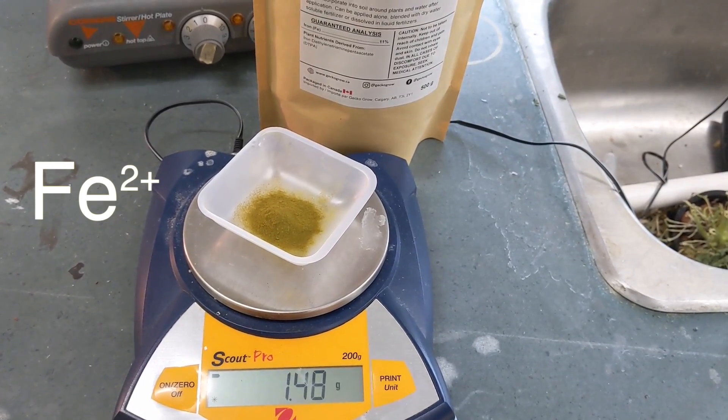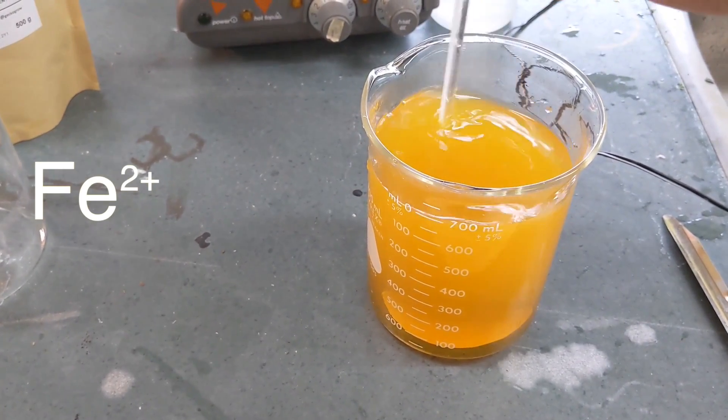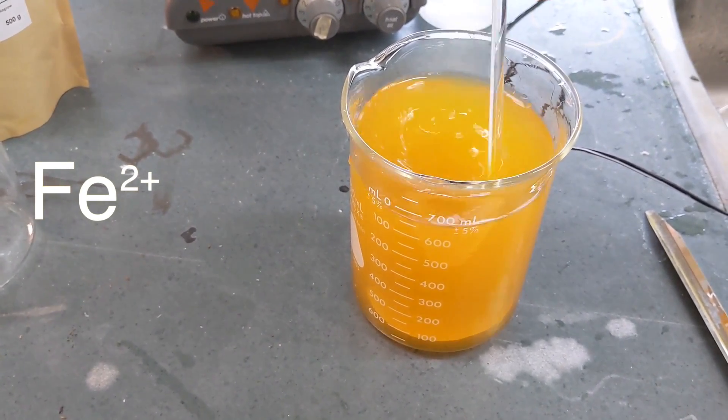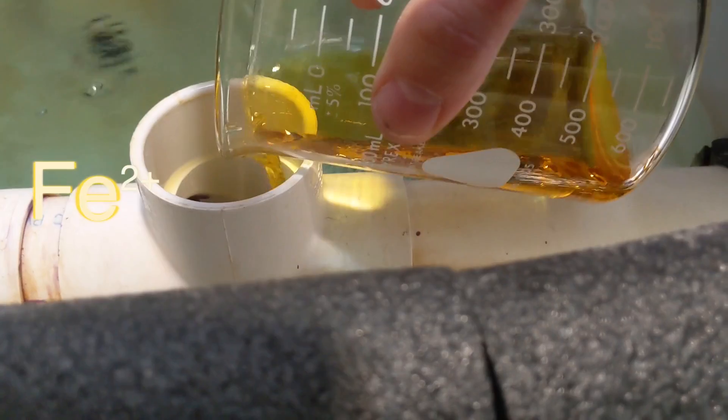We have been measuring the iron chelate on a scale, dissolving it in warm water and then adding it mainly to the grow beds because that is where it's needed.